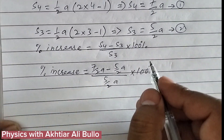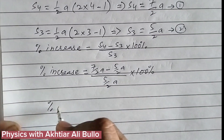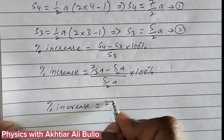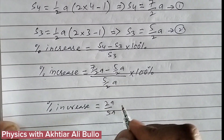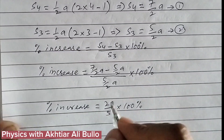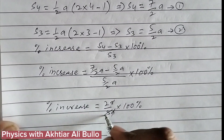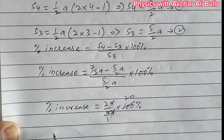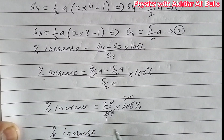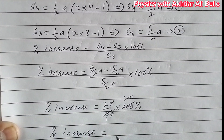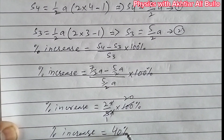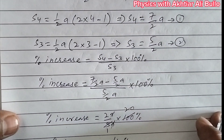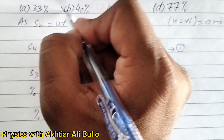After simplifying, the percentage increase equals 2a / 5a × 100%. The a cancels out, giving 2/5 × 100% = 40%. So the percentage increase in displacement is 40%, and the correct option is B, 40%.